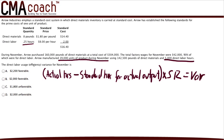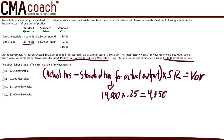Therefore, the standard direct labor hours allowed for the period is calculated by taking 19,000 units produced in November times the standard direct labor hours per unit — which is one quarter of an hour. Multiplying both numbers gives us 4,750 hours. That's how many hours the company was supposed to use to produce 19,000 units. The standard rate is $8 an hour, which is also given.